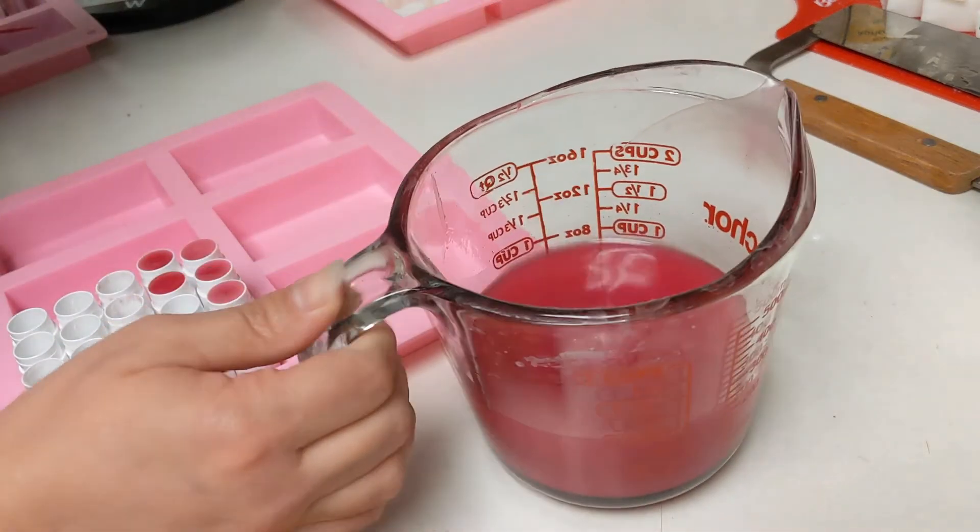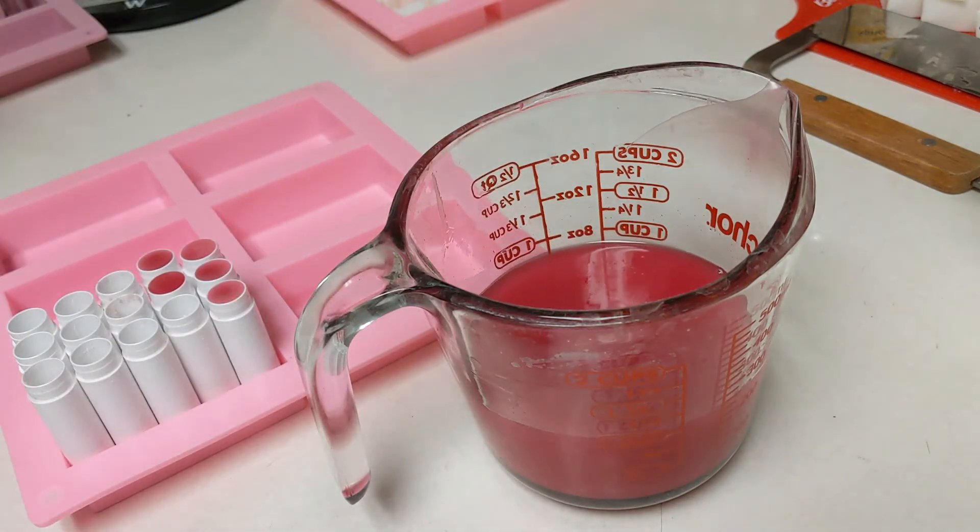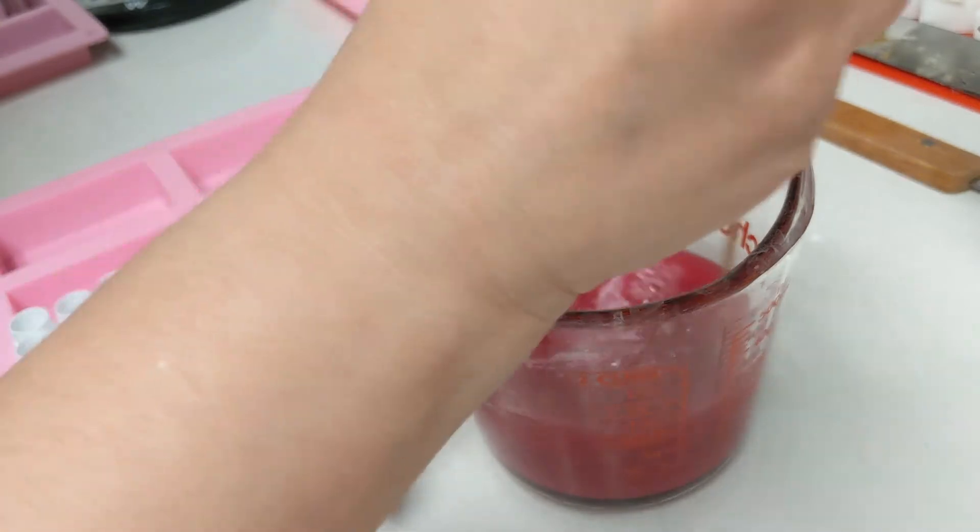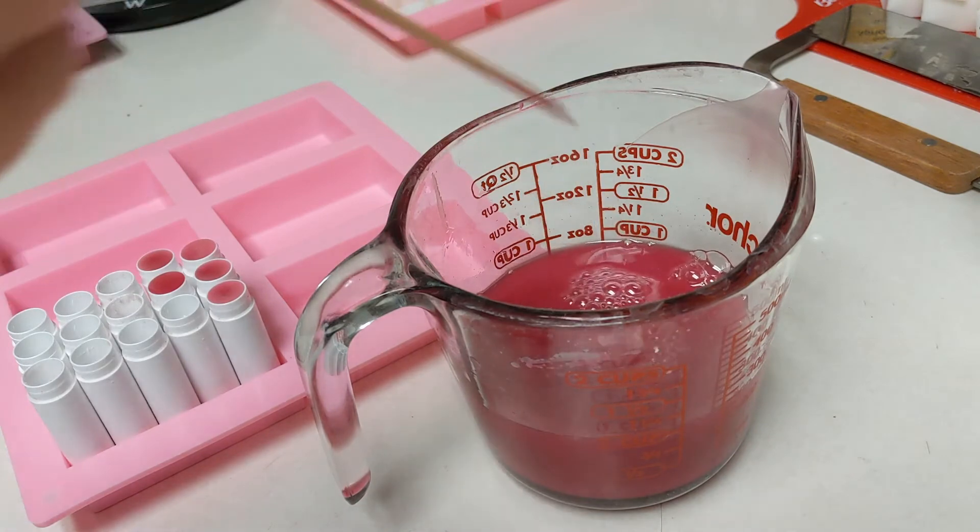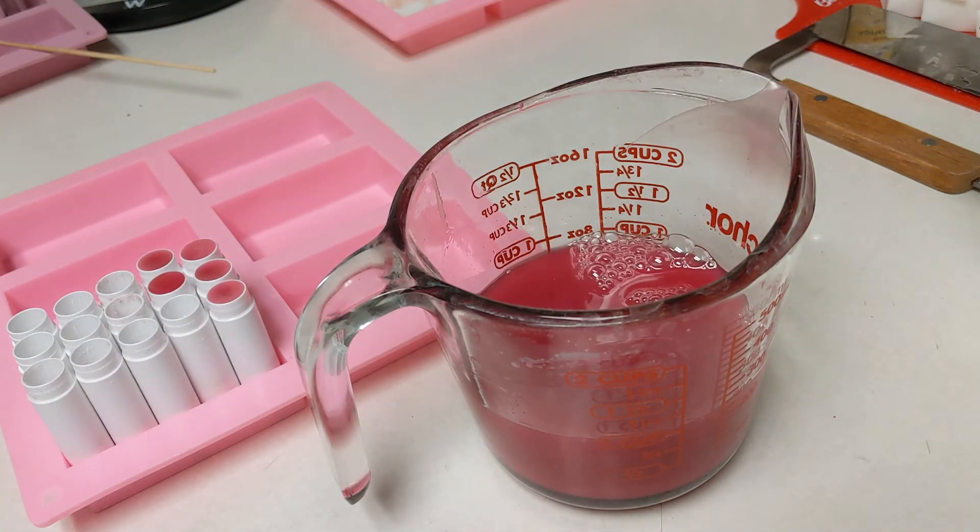I've seen online that people have like a little tray that they can set their tubes into to make pouring easier and to make it easier to clean up. But I ended up just putting them into one of the empty cavities in my soap molds.